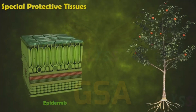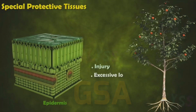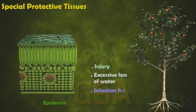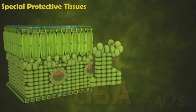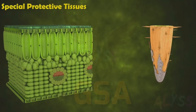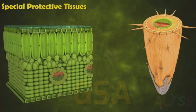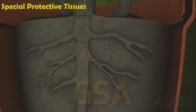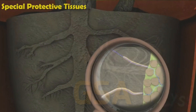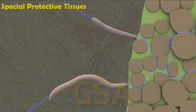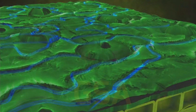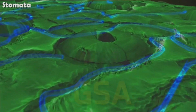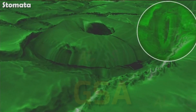Epidermis protects the inner parts from injury, excessive loss of water, and infection from microbes. Some epidermis cells get modified to root hair in the roots to absorb water and minerals. Root hairs are so tiny that they are able to reach between the soil particles. In leaves, the lower epidermis has openings called stomata for exchange of gases and transpiration.